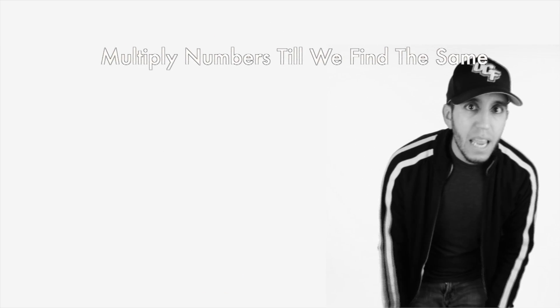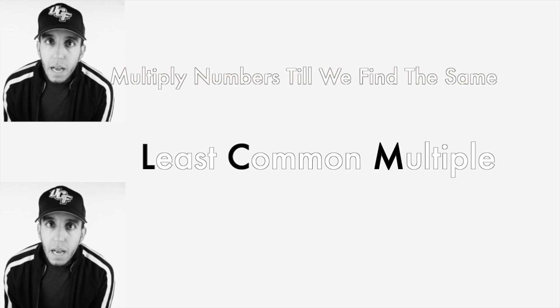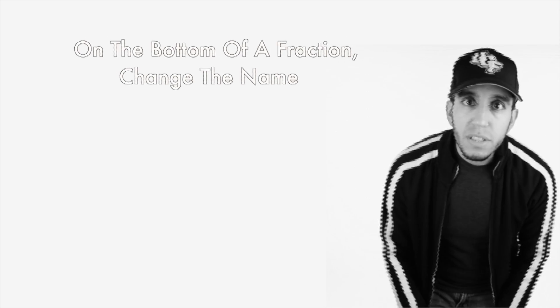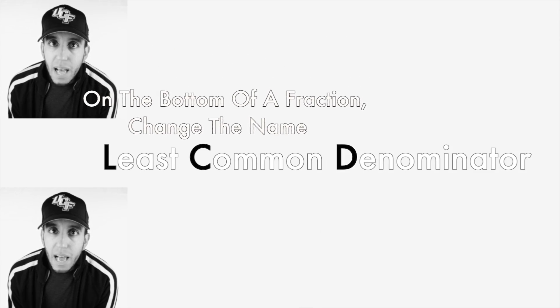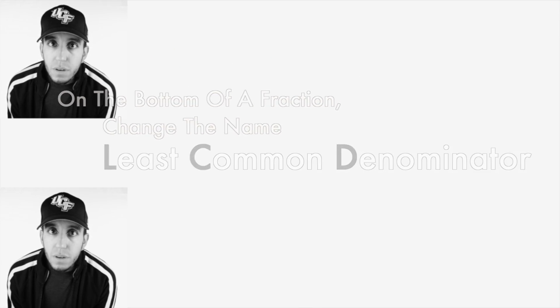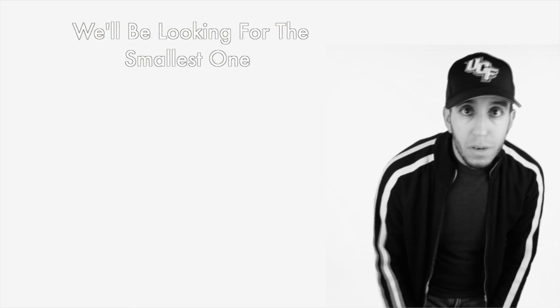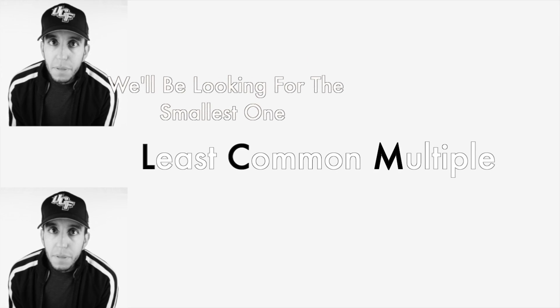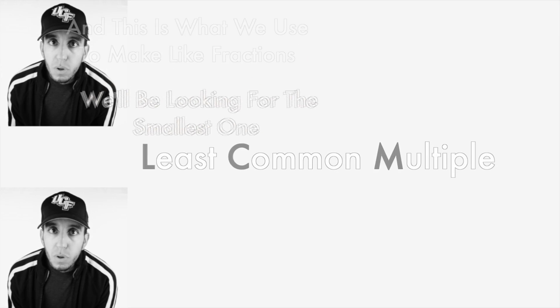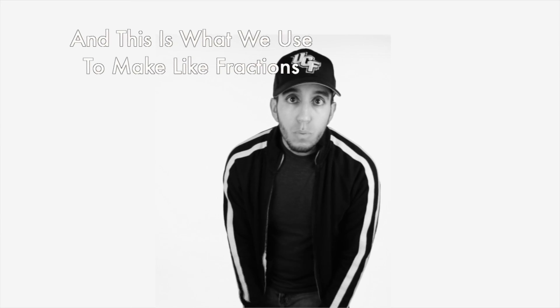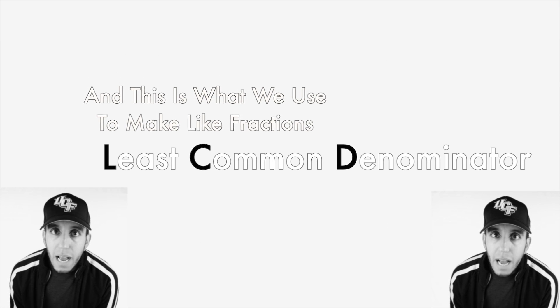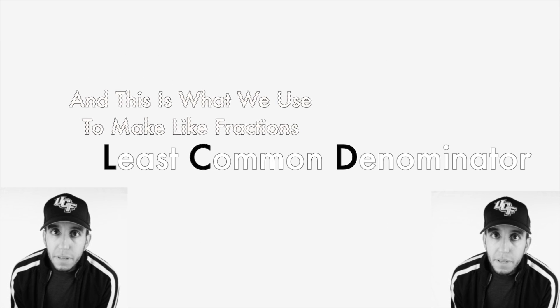Gonna multiply numbers till we find the same Least Common Multiple. On the bottom of a fraction then we'll change the name — Least Common Denominator. We'll be looking for the smallest one, Least Common Multiple. And this is what we used to make like fractions — Least Common Denominator.